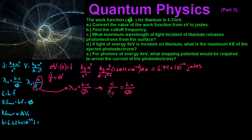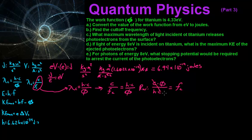Rewriting once more and rearranging, we throw the cutoff frequency up — so we get C times phi, which is your work function, divided by H times C, and that gives us our cutoff frequency. We can then cancel out those C's, and we're left with phi — the work function — divided by Planck's constant.